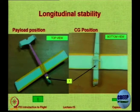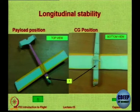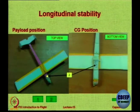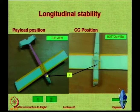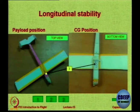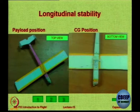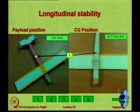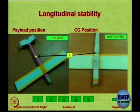The first position of the center of gravity was slightly ahead of the aerodynamic center. In position two, we moved the payload slightly behind — CG is still slightly ahead of the aerodynamic center. In position three, the CG is at the aerodynamic center. In position four, the CG is behind the aerodynamic center.